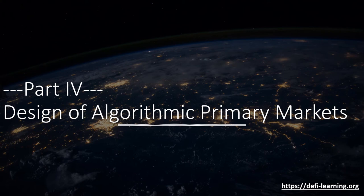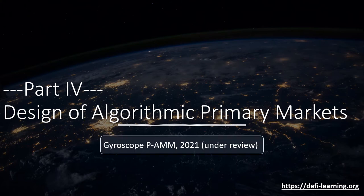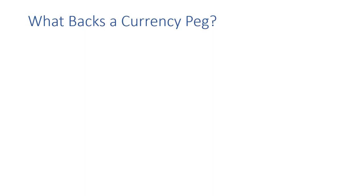In the final part of this lecture, we'll cover another related aspect of economic stability: the design of what we call algorithmic primary markets, coming from our upcoming work on the new Gyroscope mechanism. First, let's discuss how algorithmic stablecoins work and often break, by relating to how traditional currency pegs work.